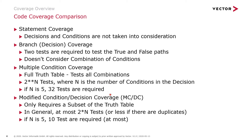Modified Condition Decision Coverage only requires a subset of the truth table — at most 2 times n tests, less if there are duplicates, versus 2 to the nth power of tests for multiple condition coverage. So for the same n equal to 5, only 10 tests are required at most versus 32 tests.